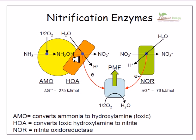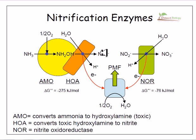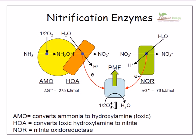To summarize the pathway: AMO converts ammonium into hydroxylamine (NH2OH); HAO then converts hydroxylamine into nitrite (NO2−). The nitrite oxidoreductase (NOR) system takes up this nitrite and converts it into nitrate (NO3−) by transferring electrons from nitrite to oxygen, which is reduced to water.